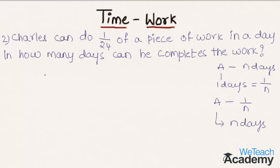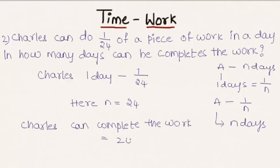According to the problem, Charles's one day work is given as 1/24, so n equals 24. Therefore, Charles can complete the work in 24 days.